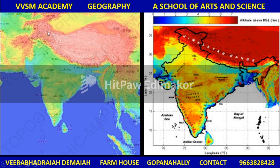You will see the Himalayan range is the important elevated part of the geographical map of India. The highest peaks are Kanchenjunga and Mount Everest. Geographical features indicate the altitude and the height of the surface of the earth and the bottom of the surface of the earth.